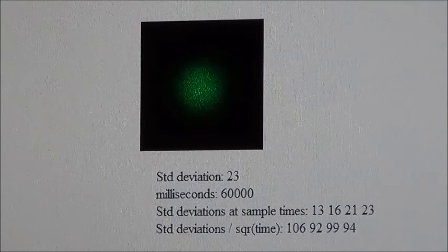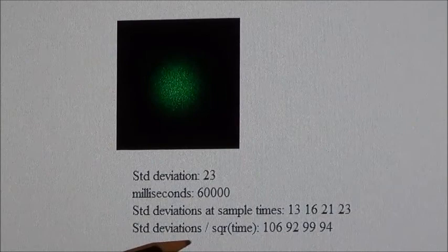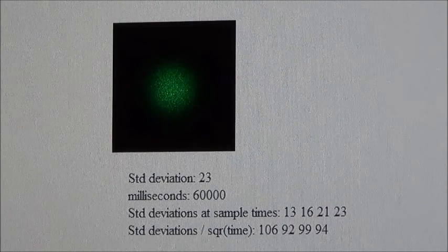In the final line the standard deviation is divided by the square root of time and is expected to be constant if the distribution is as calculated theoretically. And you can see that the results are quite constant from 106 to 94.